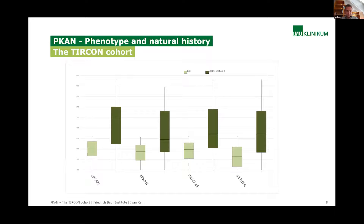Here is baseline data from our two most important motor functional scales. The BAD — Barry-Albright Dystonia — scale is shown in light green. The baseline BAD score for classic, atypical, both PKAN phenotypes combined, and all other NBIA diagnoses excluding PKAN is around 20, out of a maximum of 32 points. In contrast to other NBIA diagnoses, dystonia appears way more prominent in PKAN.